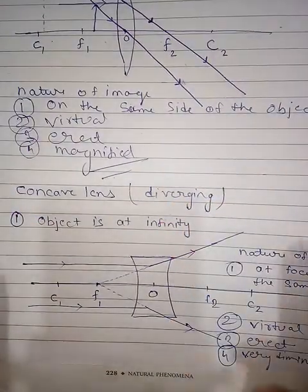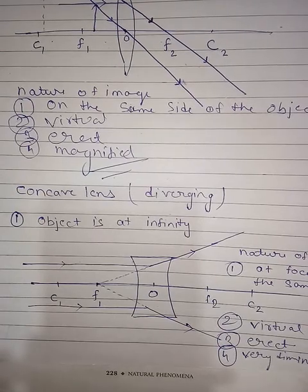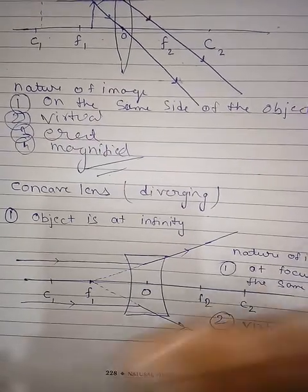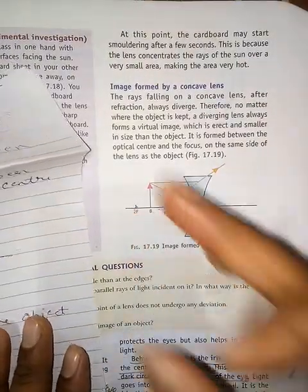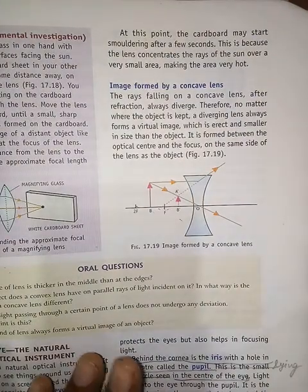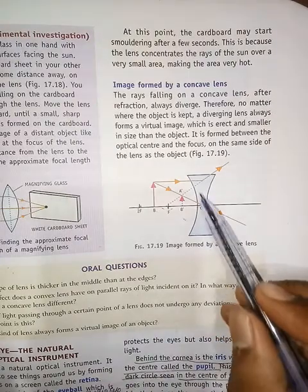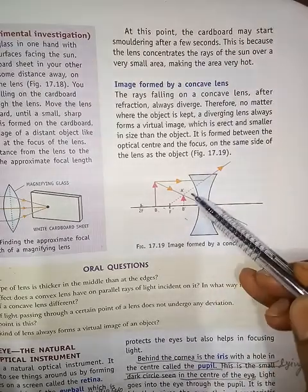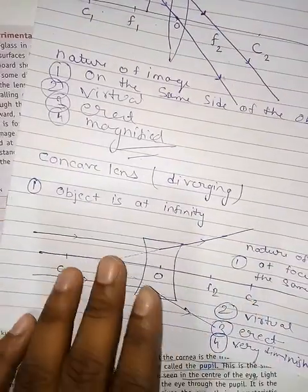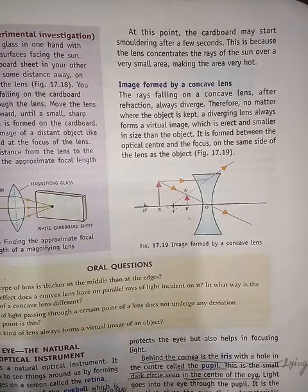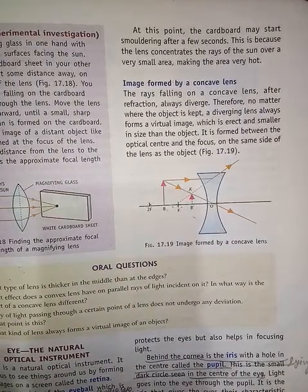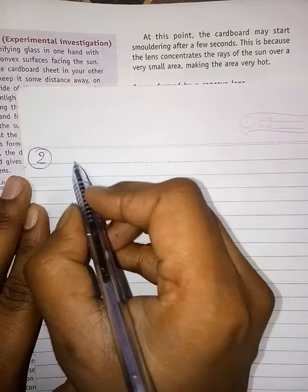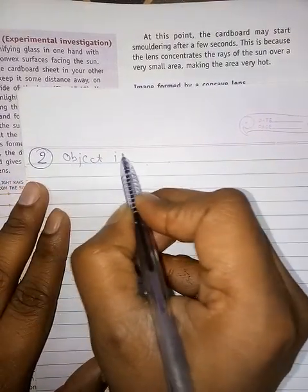यह हुआ पहला case study concave lens का — when object is at infinity। अब Case 2: when object is between focus and center of curvature। Object को infinity से नजदीक ले आते हैं और focus और center of curvature के बीच में रखते हैं।